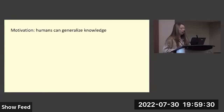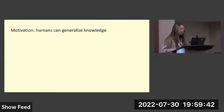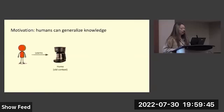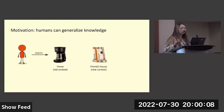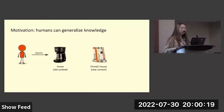The motivation behind this line of work is to understand a human's ability to generalize and transfer knowledge. For example, a human learns to make coffee in their own coffee pot at home and becomes very skilled at it. When they go to a friend's house and want to brew a perfect pot of coffee, they've never used this pot before. Since humans are able to generalize knowledge, this human is most likely going to apply the knowledge from the old pot to the new pot, since the structure of the new pot is somewhat similar.